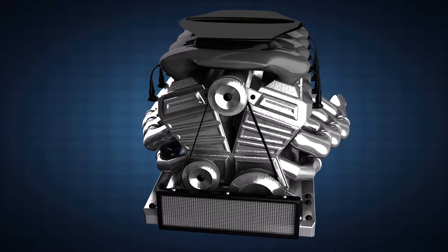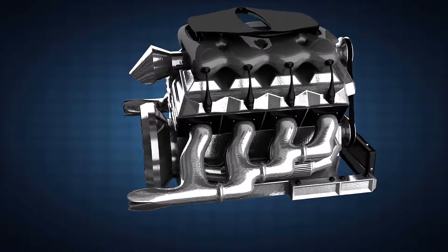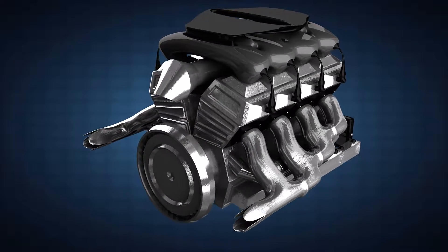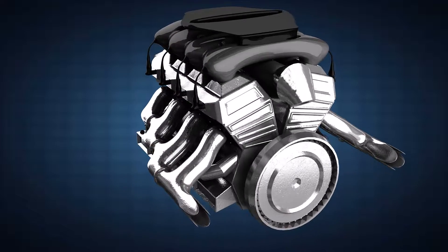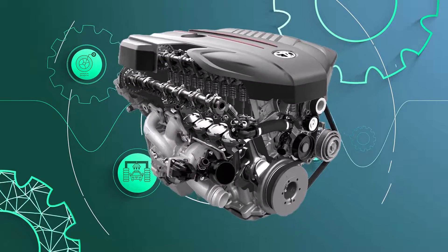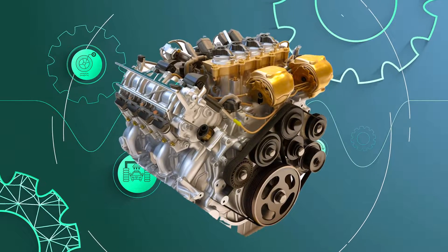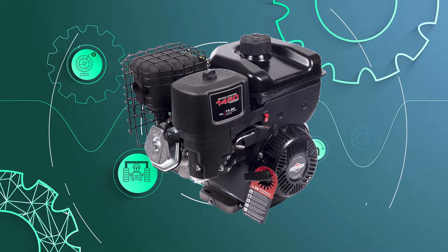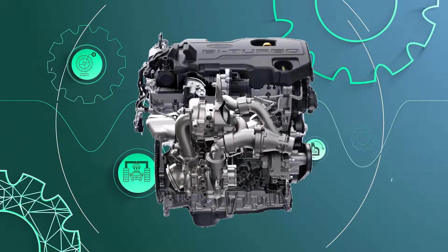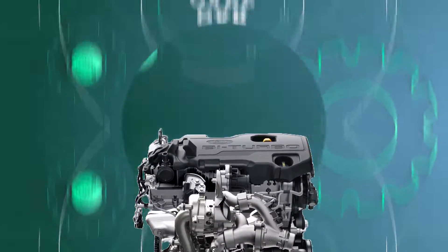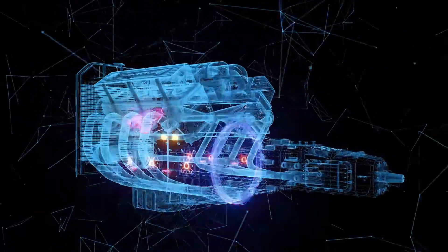These engines make everything from daily commutes to air travel possible. Moving on to engine layouts, there are various types, including inline engines, V-engines, horizontally opposed engines, and the powerful V8 Raptor engine.